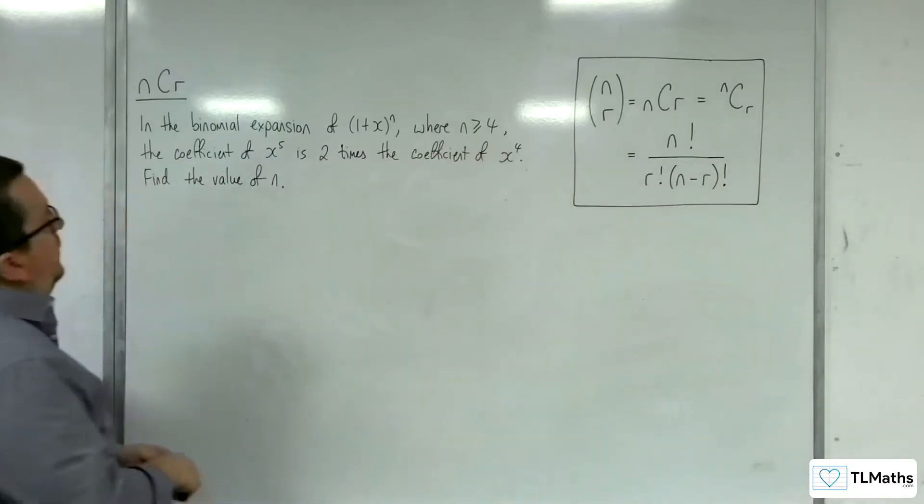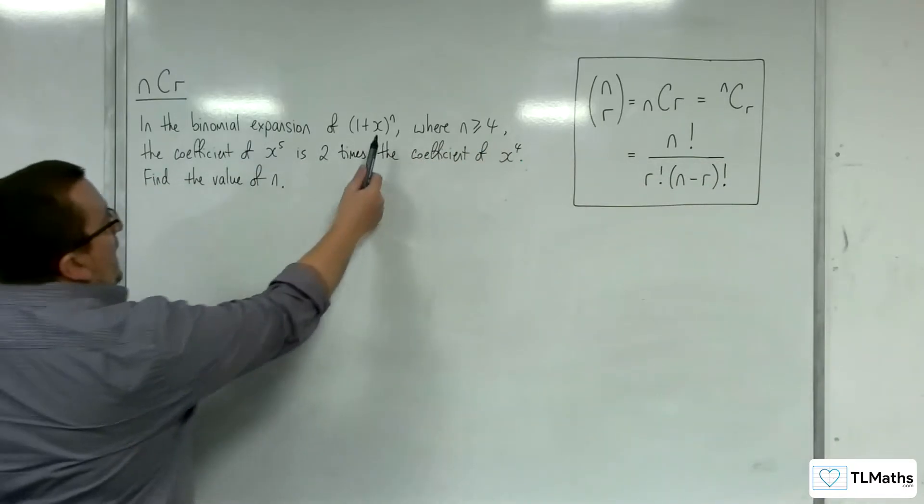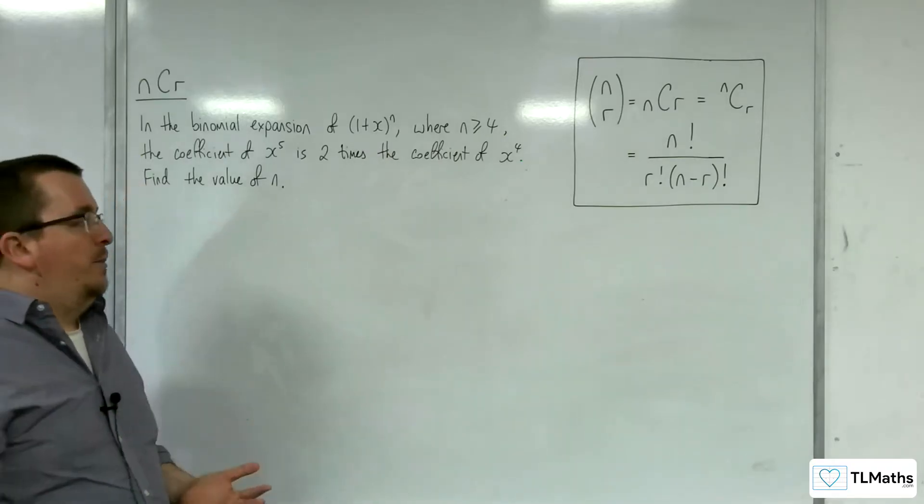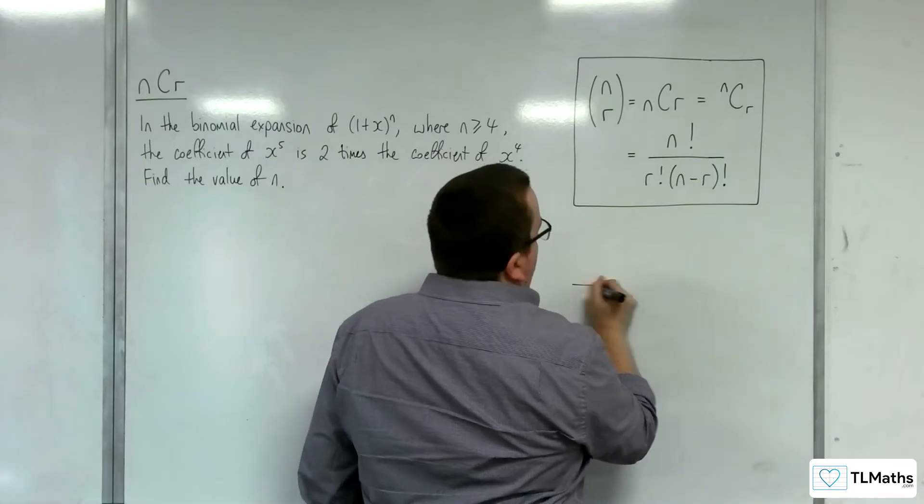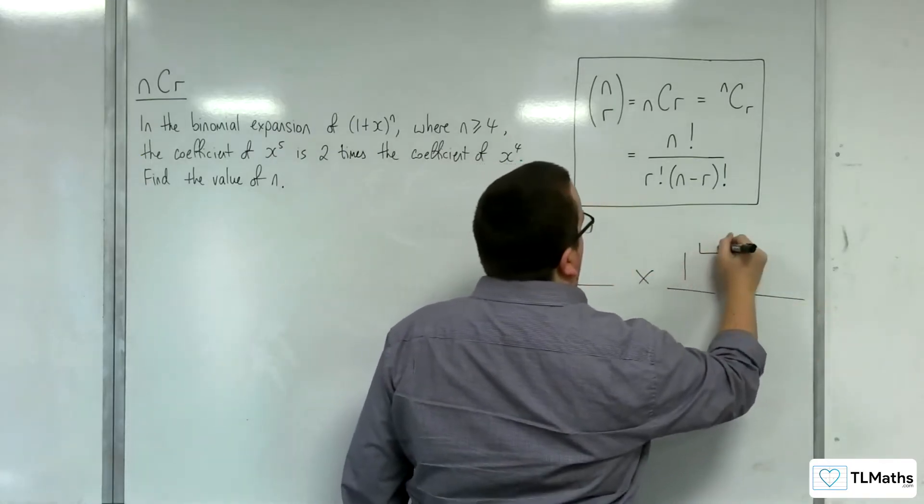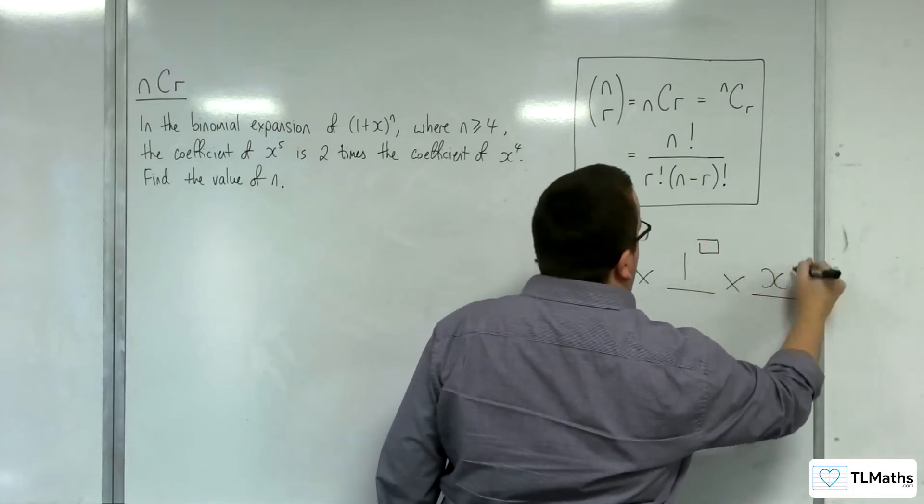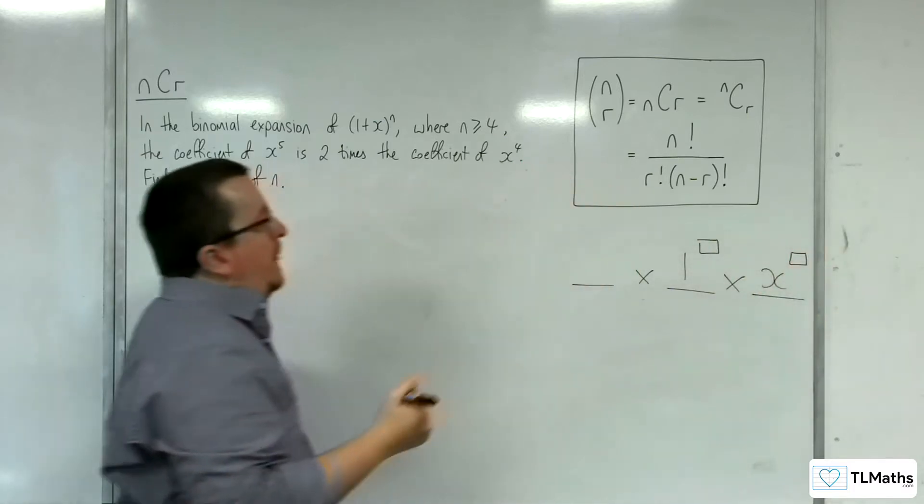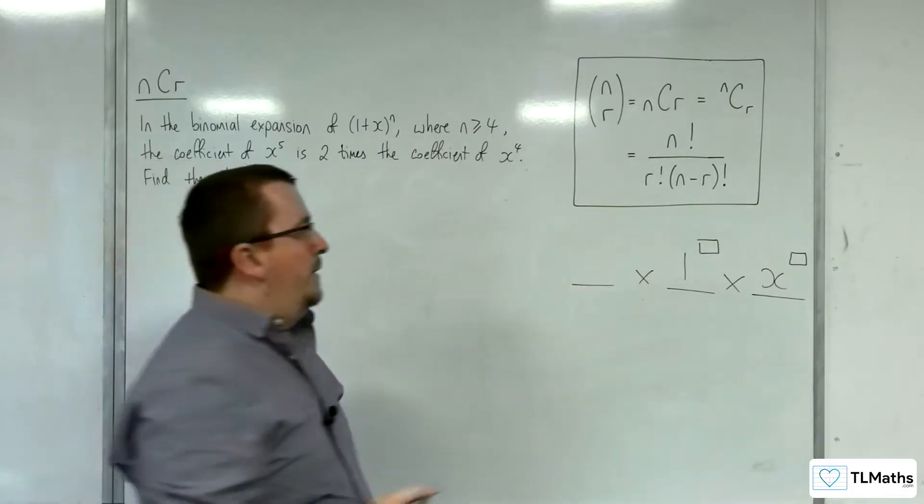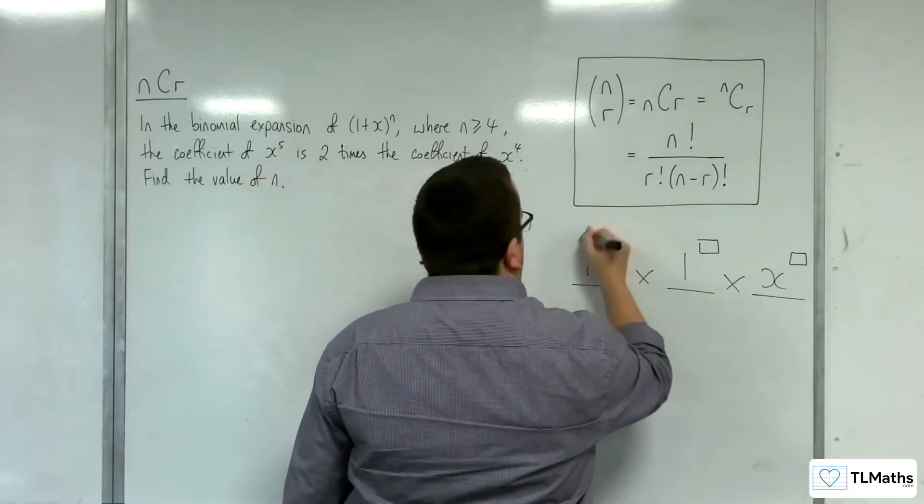Now, when you've got 1 plus x to the n, you know that each term of the binomial expansion will be of the form having 3 parts, where this is 1 to the power of something, this is x to the power of something, and what you've got here is your ncr.